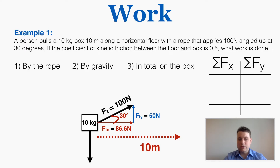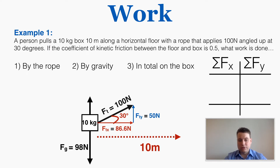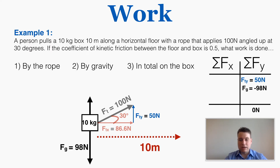There's also a force of gravity going straight down, found by multiplying mass times gravity. Since the object is not moving up or down, the total force in the y direction must equal 0. The upward component of tension is 50 Newtons, and adding that to the downward force of gravity, the normal force must be positive 48 Newtons upward to make the y forces balance to zero.